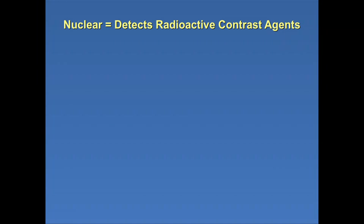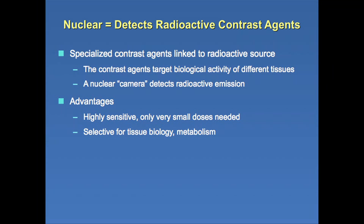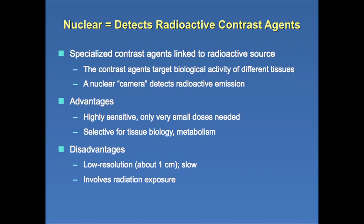Nuclear imaging uses a radioactive contrast agent that is targeted to specific tissue types; a nuclear camera picks up the radioactive emission from that agent. It's very sensitive — you can give very small amounts of contrast agent and still detect it. These agents are designed to detect inflammation and blood flow to the heart, so they're oriented around biology and metabolism. However, nuclear imaging has much lower resolution than the other techniques, it is slow, and it does involve ionizing radiation.